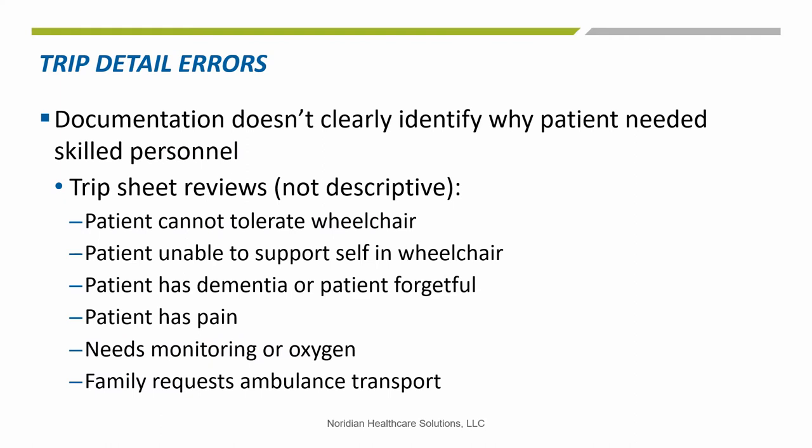Common explanations found during many reviews of trip sheets include, but are not limited to: patient cannot tolerate wheelchair; patient unable to support self in wheelchair; patient has dementia or patient is forgetful; patient has pain; needs monitoring or oxygen; family requests; and ambulance support. These statements don't reflect a concise explanation of the medical necessity of ambulance transport and/or skilled monitoring. The documentation needs to convey the who, what, when, and why — a full picture of the patient's condition.